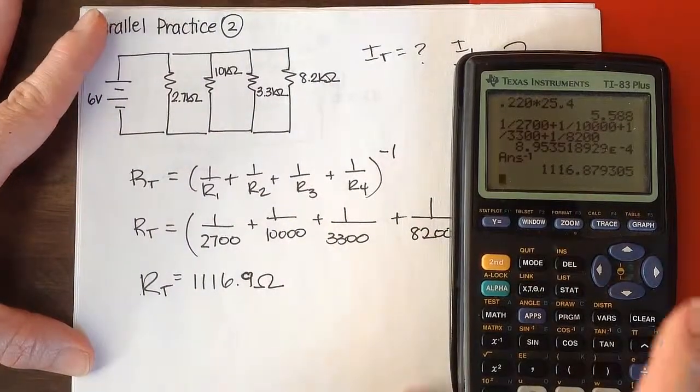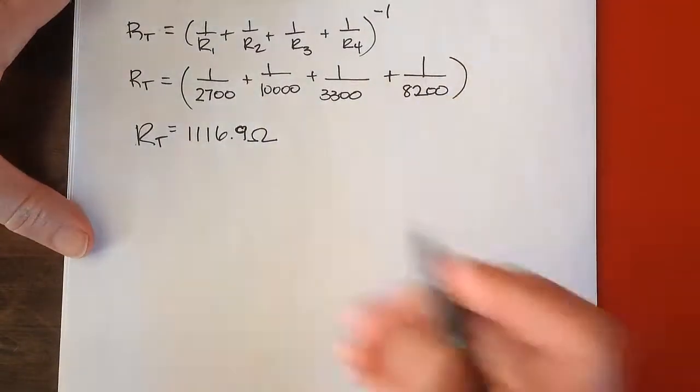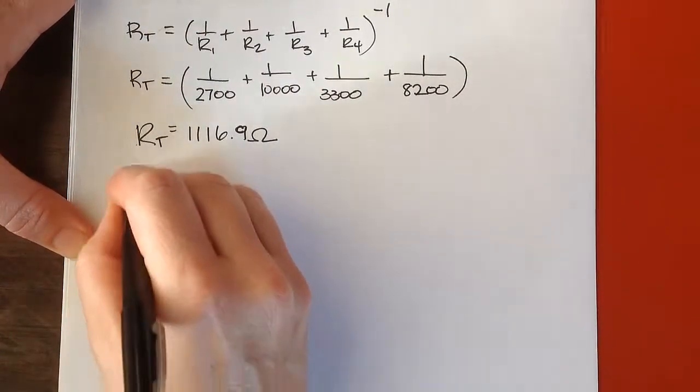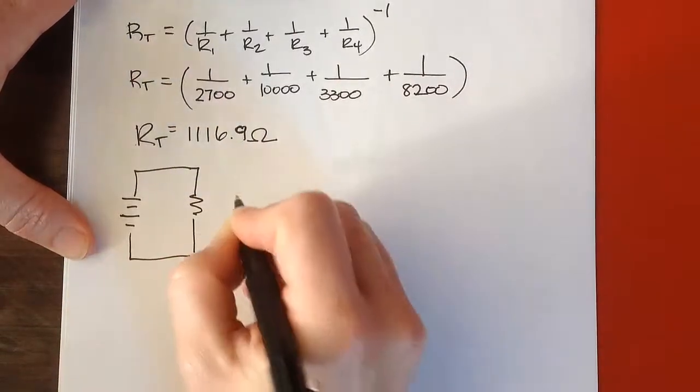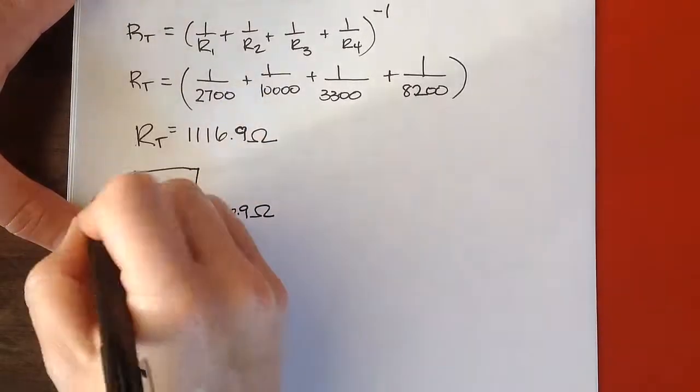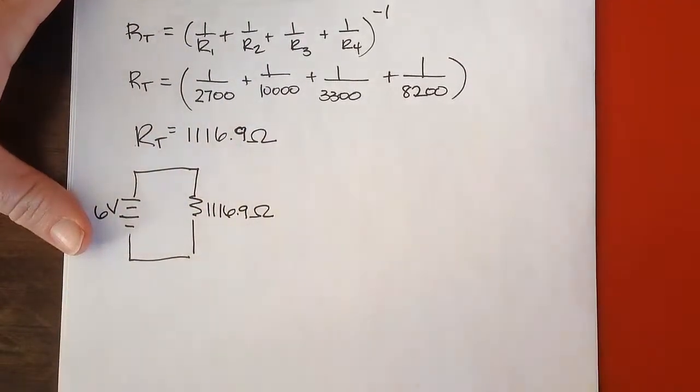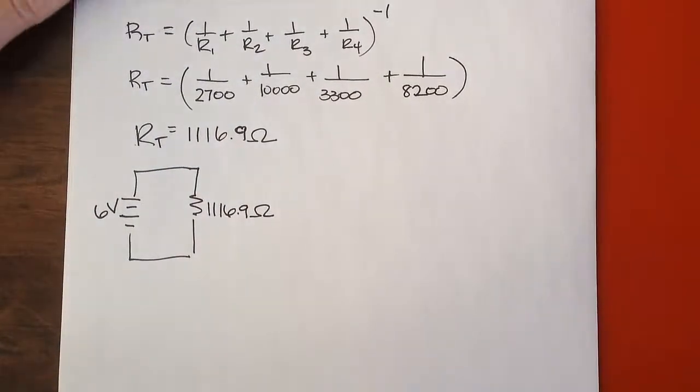So we've reduced that parallel circuit now to be the equivalent to this circuit with the 6 volt source. You can hear that our kitty objects to that on some level, evidently.